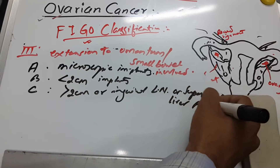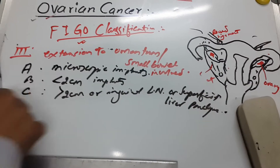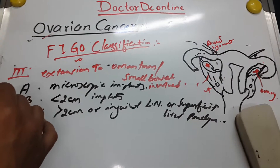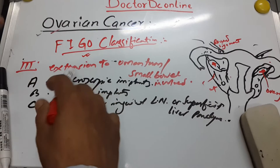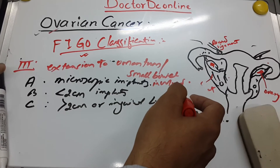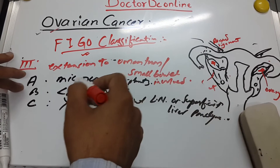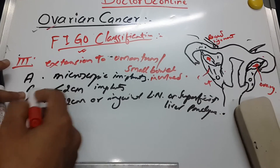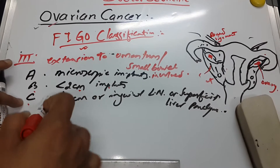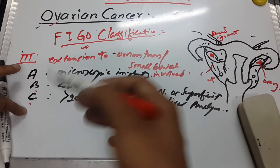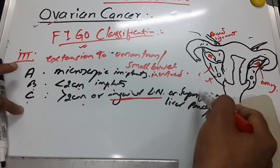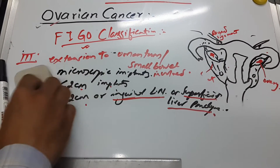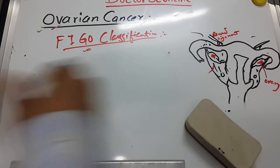Stage IIIC has implants more than two centimeters, and the inguinal lymph nodes as well as superficial liver parenchyma are also involved. To recap: Stage I is only ovary involved, Stage II is extension to pelvis, and Stage III is extension to omentum and small bowel — with IIIA being microscopic implants, IIIB less than two centimeters, and IIIC more than two centimeters with inguinal lymph node involvement.